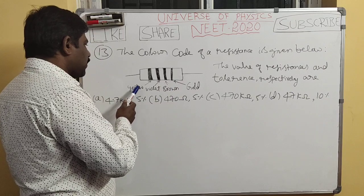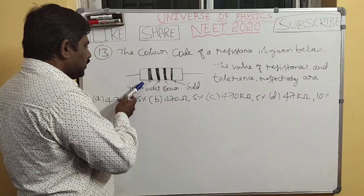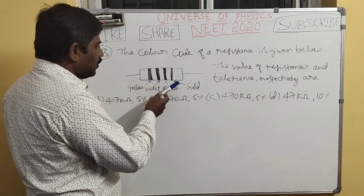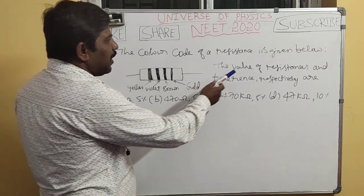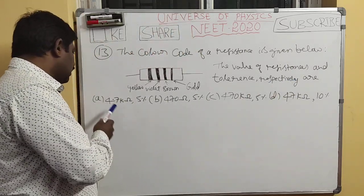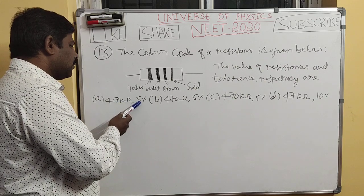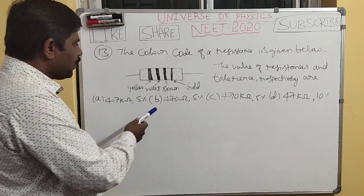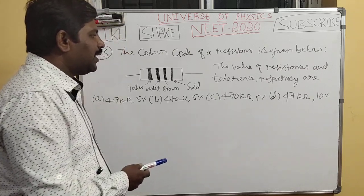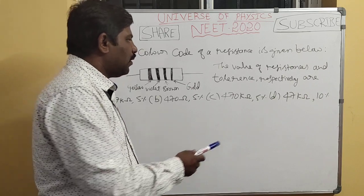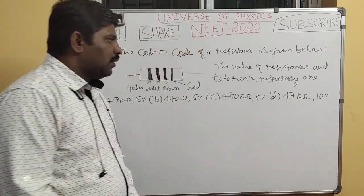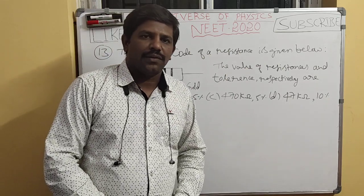The carbon resistor has colored bands: yellow, violet, brown, and gold. The options for resistance value and tolerance are: (A) 4.7 kΩ ±5%, (B) 470 Ω ±5%, (C) 470 kΩ ±5%, and (D) 47 kΩ ±10%.